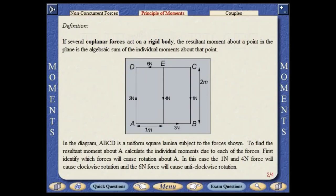If several coplanar forces act on a rigid body, the resultant moment about a point in the plane is the algebraic sum of the individual moments about that point. In the diagram, ABCD is a uniform square lamina subject to the forces shown. To find the resultant moment about a point, it is necessary to calculate the individual moments due to each of the forces. The resultant moment about point A is found to be plus 6 Newton meters. As this result is positive, the lamina will rotate in the anticlockwise direction if A is the axis of rotation.